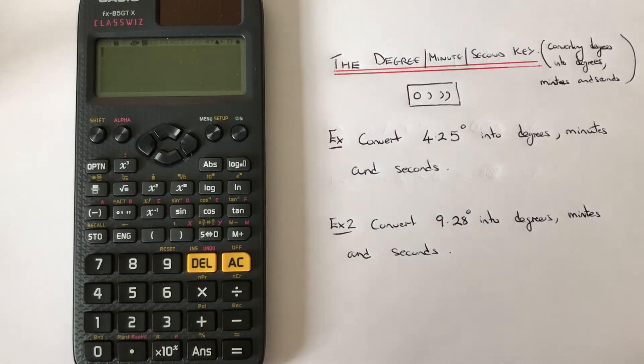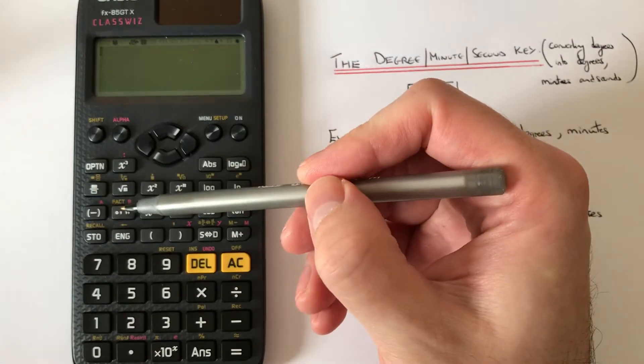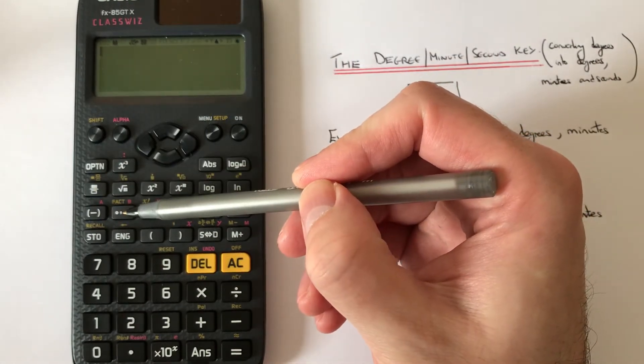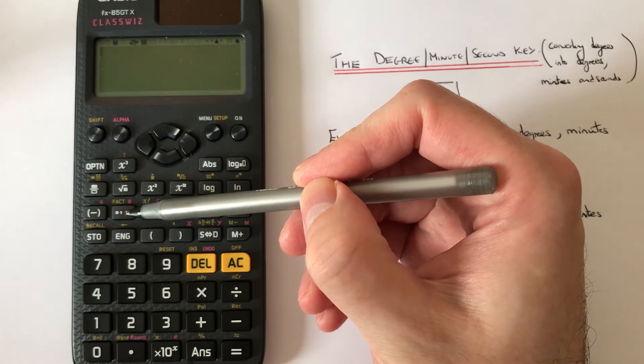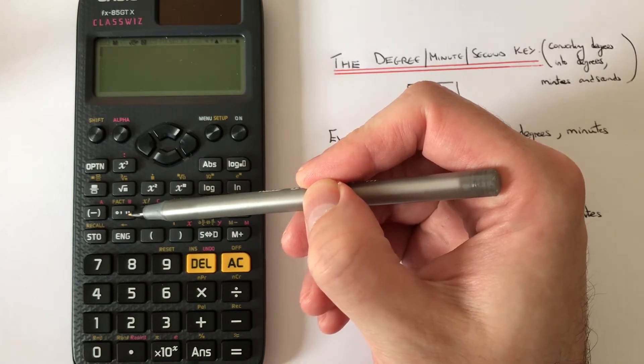So the degree, minute and second key can be located on the third row of the functions on the scientific calculator. So it's this one here.